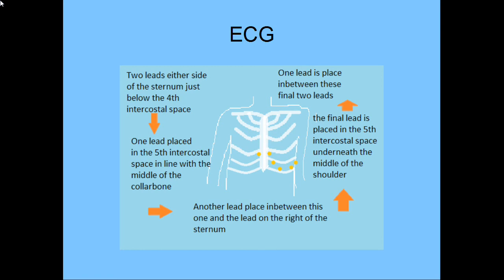Now all these leads, as you can see here in the diagram, look at the heart from different angles, and of course come up with different vectors when they measure the depolarisation wave. All these are combined together to produce the ECG that we normally see.